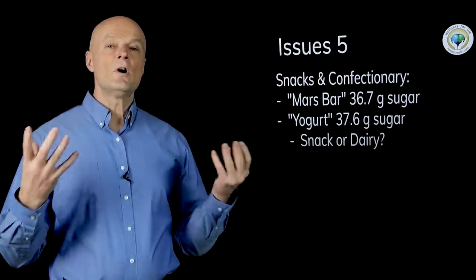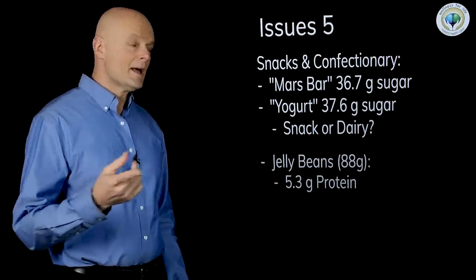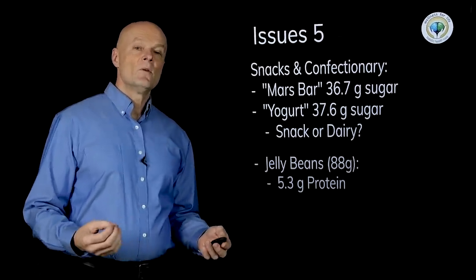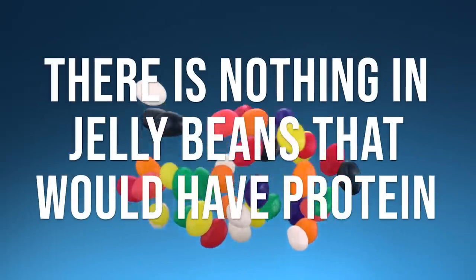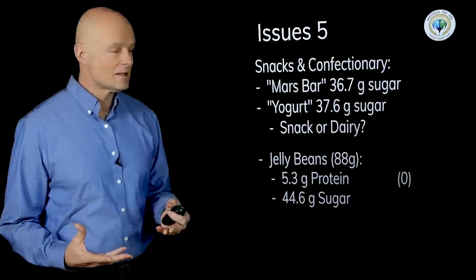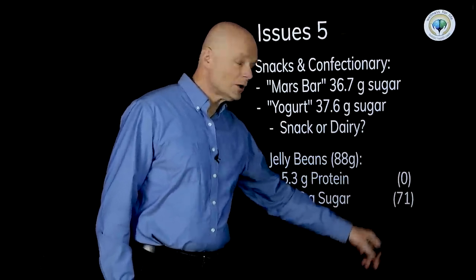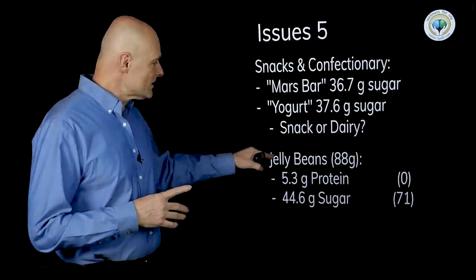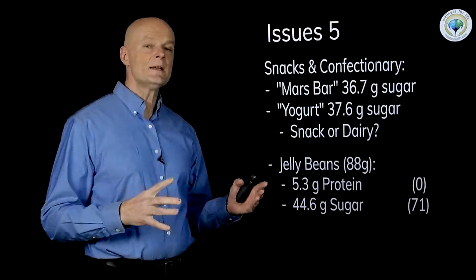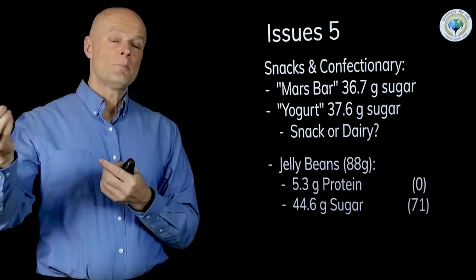We also need to be aware of what are we comparing. In the snacks they also had jelly beans. They served 88 grams of jelly beans and they said that these have 5.3 grams of protein. This sounded really strange to me because as far as I know there's nothing in jelly beans that would have protein. And when I looked it up indeed there was zero protein in jelly beans. And they said that there should be 44.6 grams of sugar in that amount of jelly beans, whereas everywhere I looked it was 71 grams. So obviously jelly beans are not food but we need to ask ourselves what are we comparing? If they have a type of food in a study and they find a certain type of result does that in any way compare to the food that you're going to find and buy and consume?